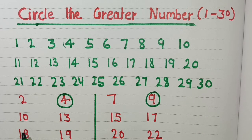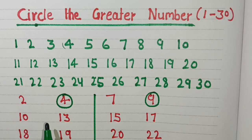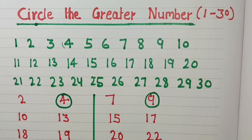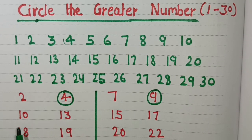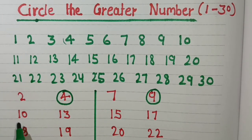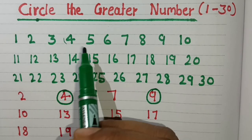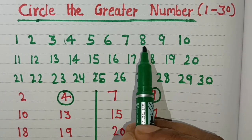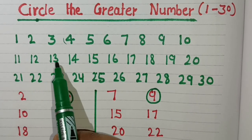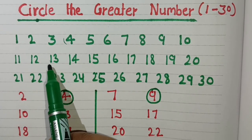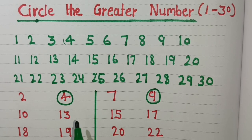Next numbers are 10 and 13. Let's do the counting: 1, 2, 3, 4, 5, 6, 7, 8, 9, 10, 11, 12, 13. So 13 is the greater number. We will circle number 13.